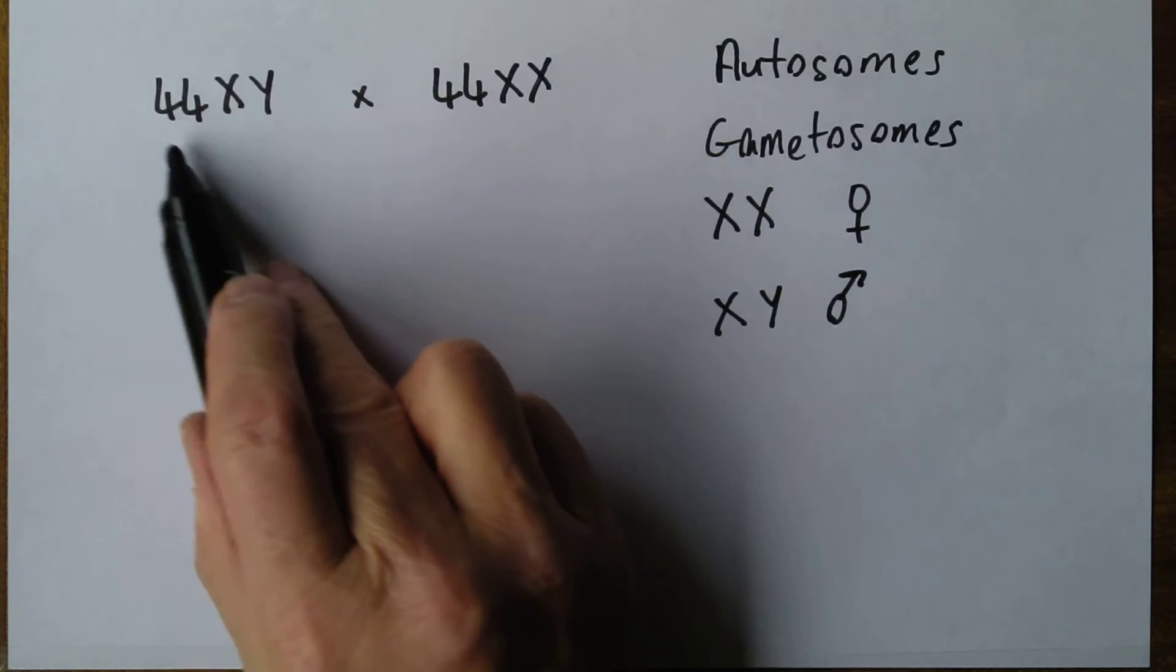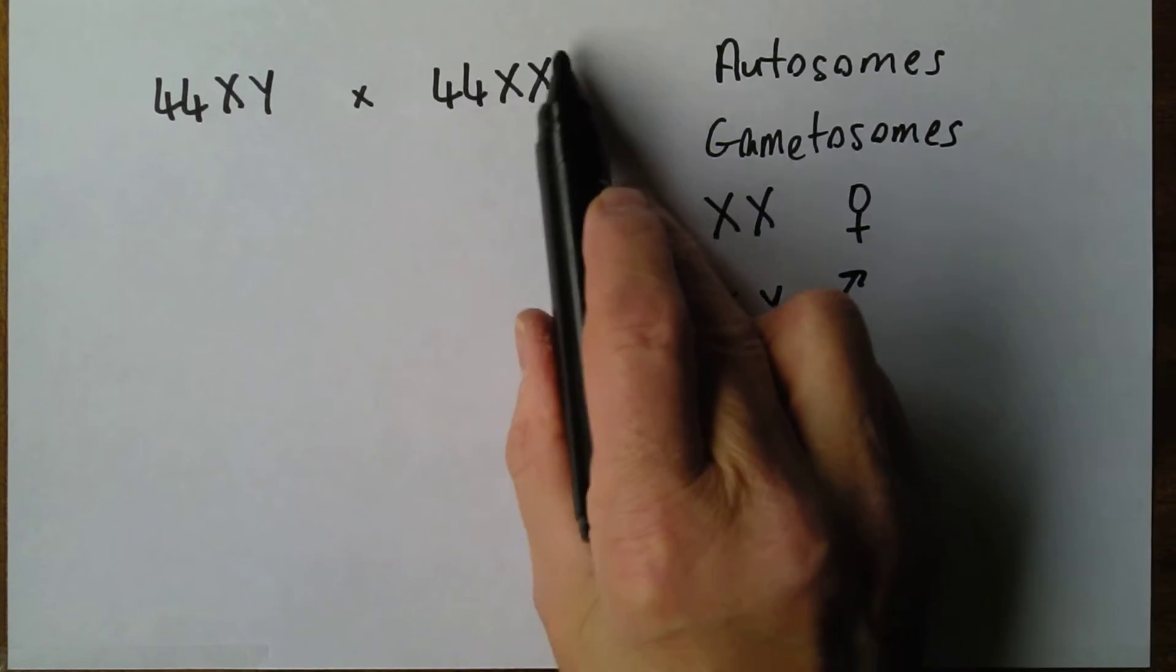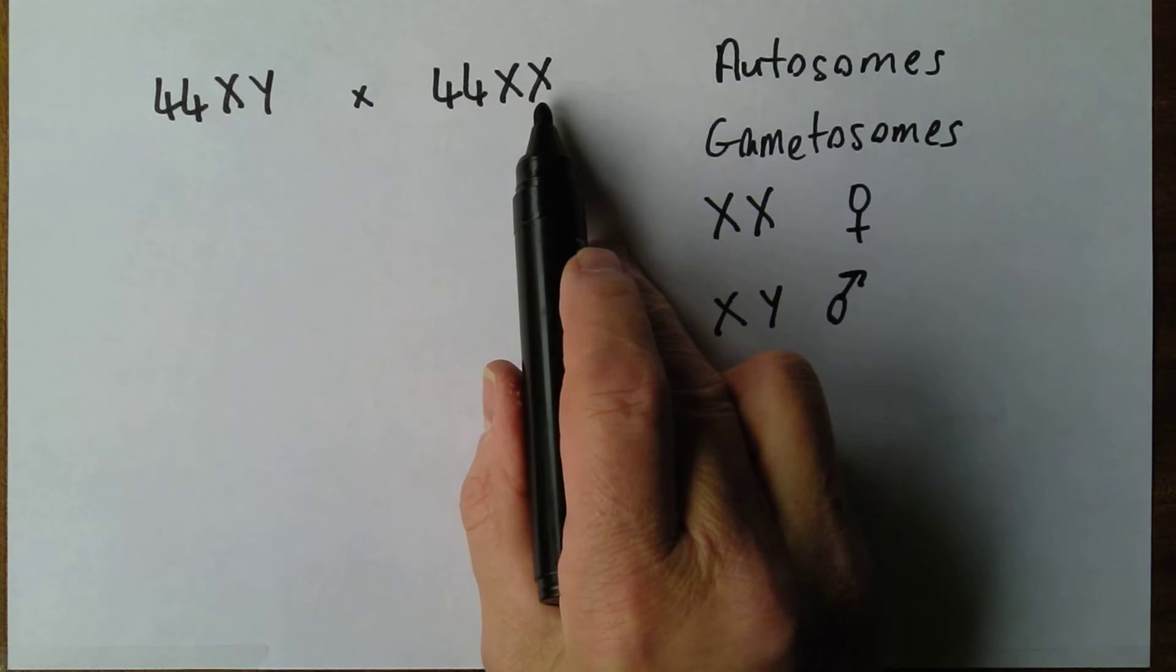So 46 chromosomes altogether, 44 of which are autosomes plus the two gametosomes or the sex chromosomes.